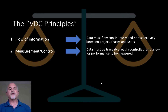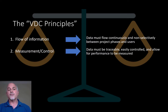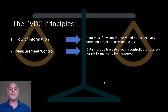The second principle is all about measurement and control. What that means is that the data needs to be traceable and easily controlled, because if it is, the data has better credibility and authenticity and will be trusted by all stakeholders, especially the owner. In addition, having data in this manner will enable generating metrics on performance improvements from application of the technology — for instance, schedule savings or rework reduction — that again add value to the owner.